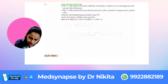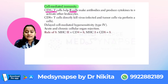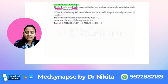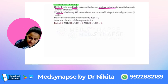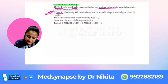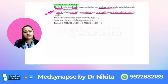You have CD4-positive T cells which are the helper cells — they help B cells make antibodies, and they produce cytokines to recruit phagocytes and activate other WBCs. CD8-positive cells are cytotoxic — they directly kill virus-infected and tumor cells via perforin and enzymes, similar to natural killer cells.